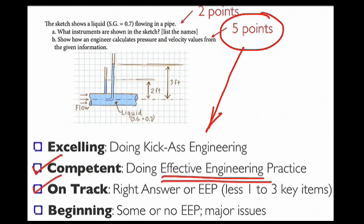If you're on track — meaning you either have the right answer or you're doing an effective engineering process less one or two key items — that's worth three points. And if you're beginning, or in the not-yet category, that's worth zero, one, or two points.